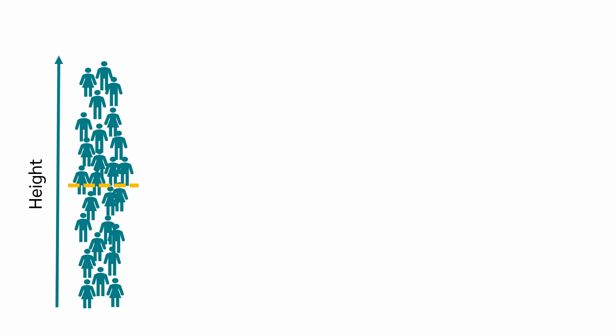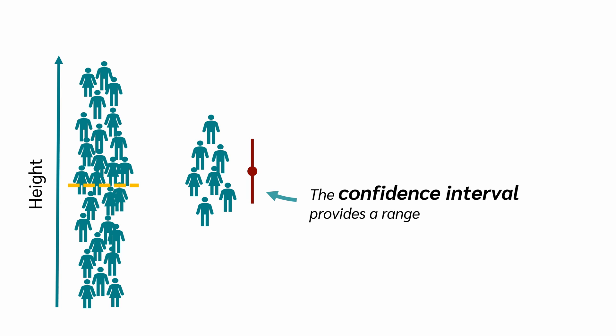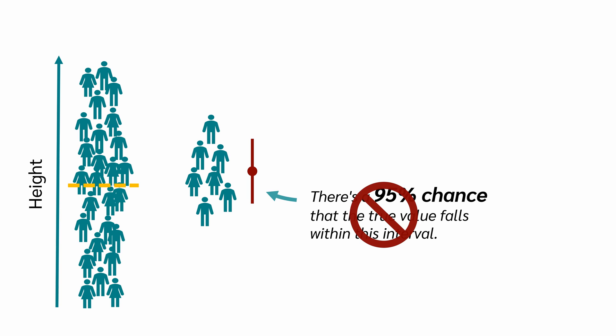Imagine we have a population with a true mean value. This true mean value is the one we want to estimate. Although we don't know this true mean, we can make an educated guess by taking a sample from the population. From this sample, we calculate both the sample mean and the 95% confidence interval. The simplified interpretation is to say, the confidence interval provides a range within which the true mean lies with a certain probability. Or in case of the 95% confidence interval, we would say, there is a 95% chance that the true value falls within this interval. However, this interpretation isn't accurate. But why?